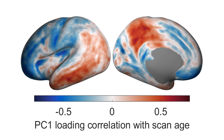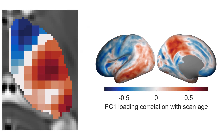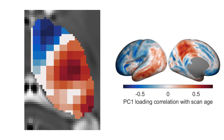We can do the same analysis for thalamic seeds, and we can see that there are age-related shifts in anterior, ventrolateral, and ventroposterior areas. Based on the conserved connectivity patterns, regions of the thalamus showing age-related changes and the cortical regions showing age-related changes are preferentially connected to each other.